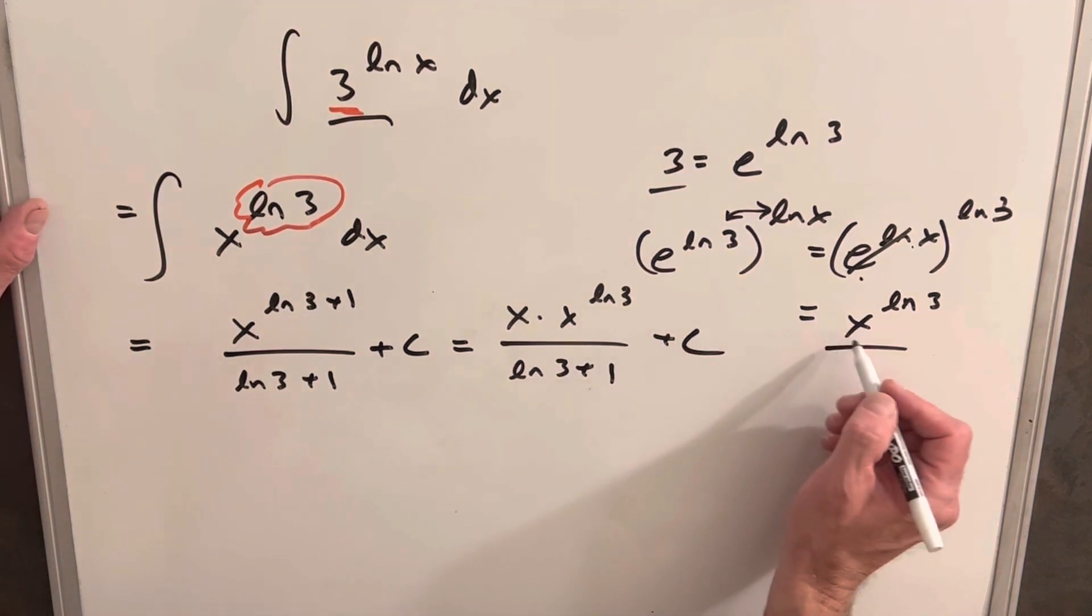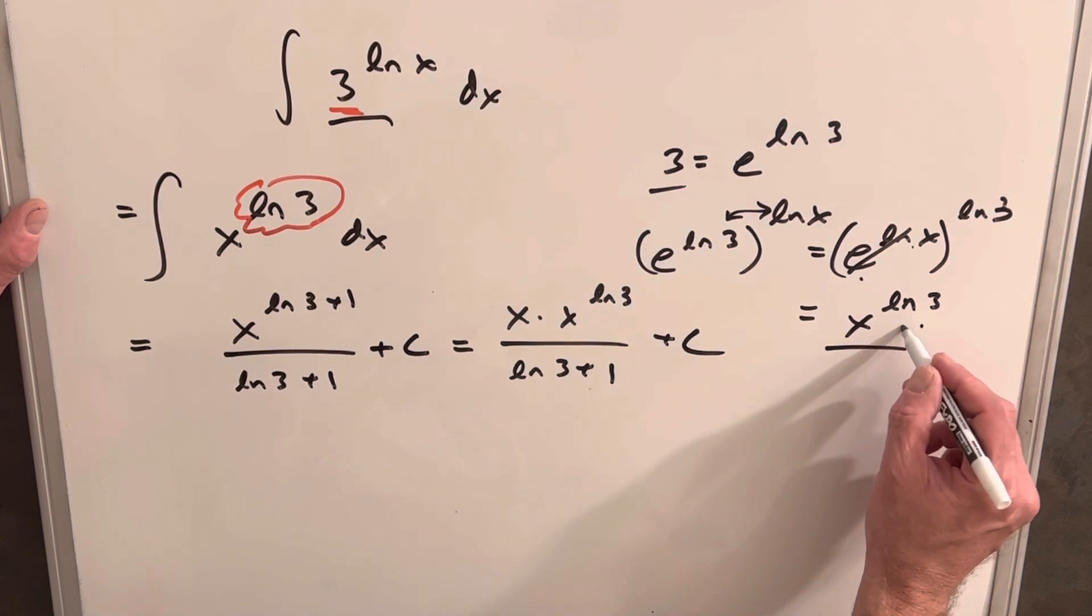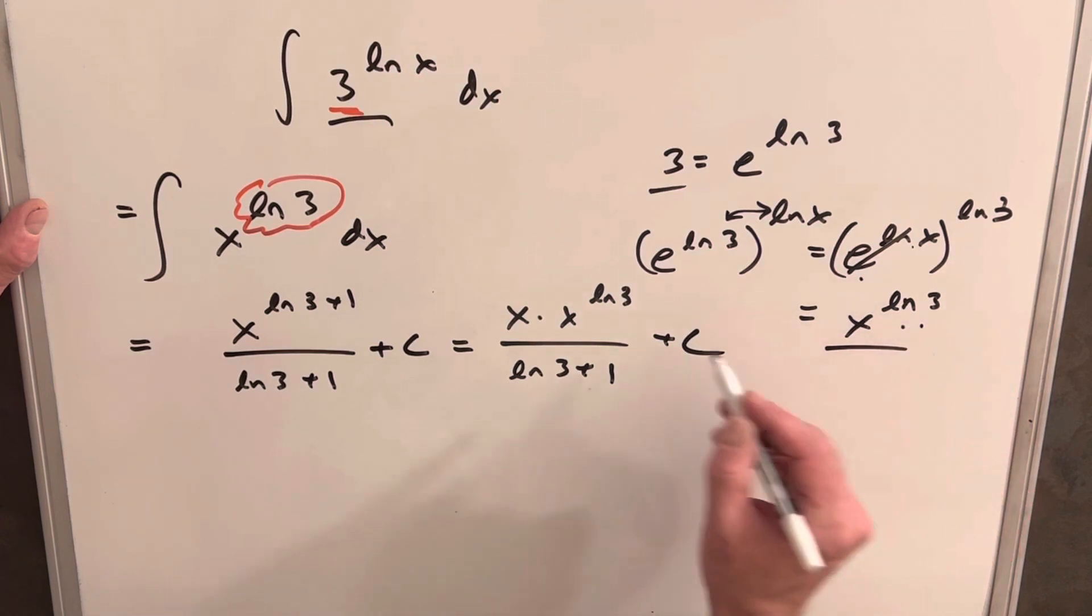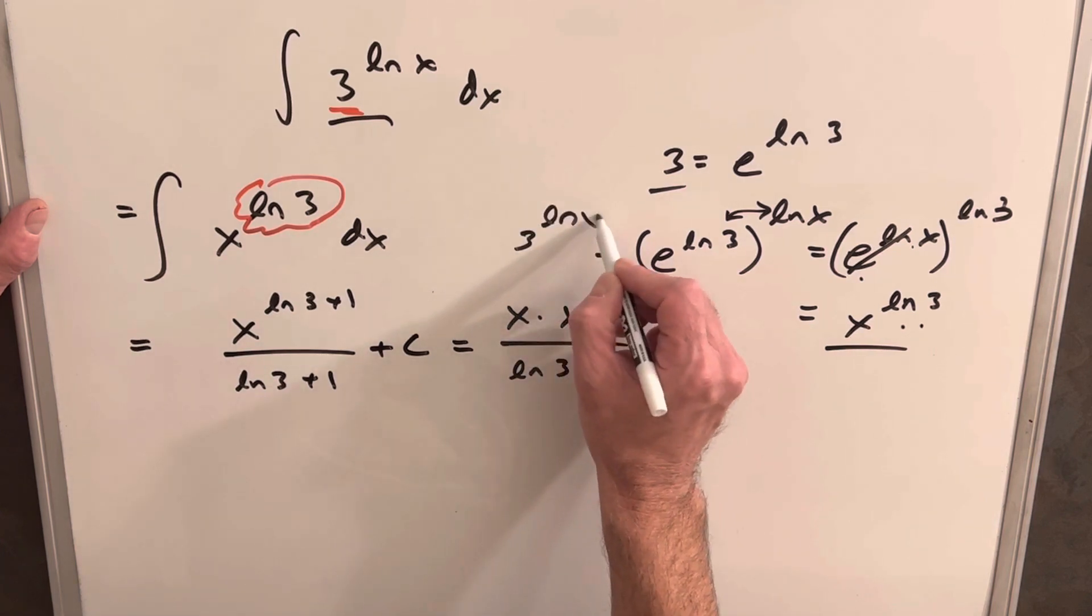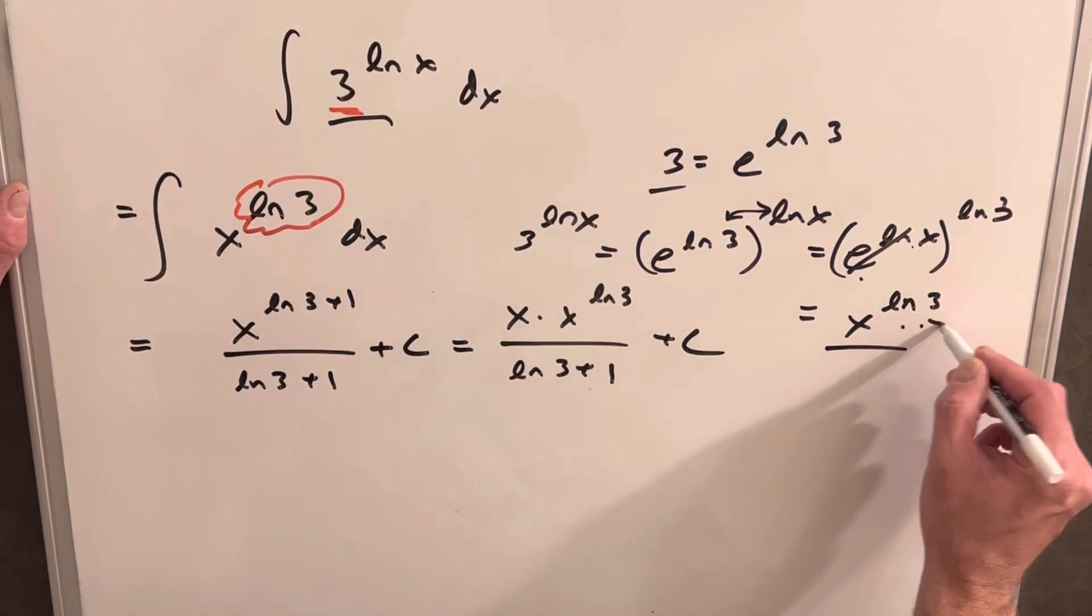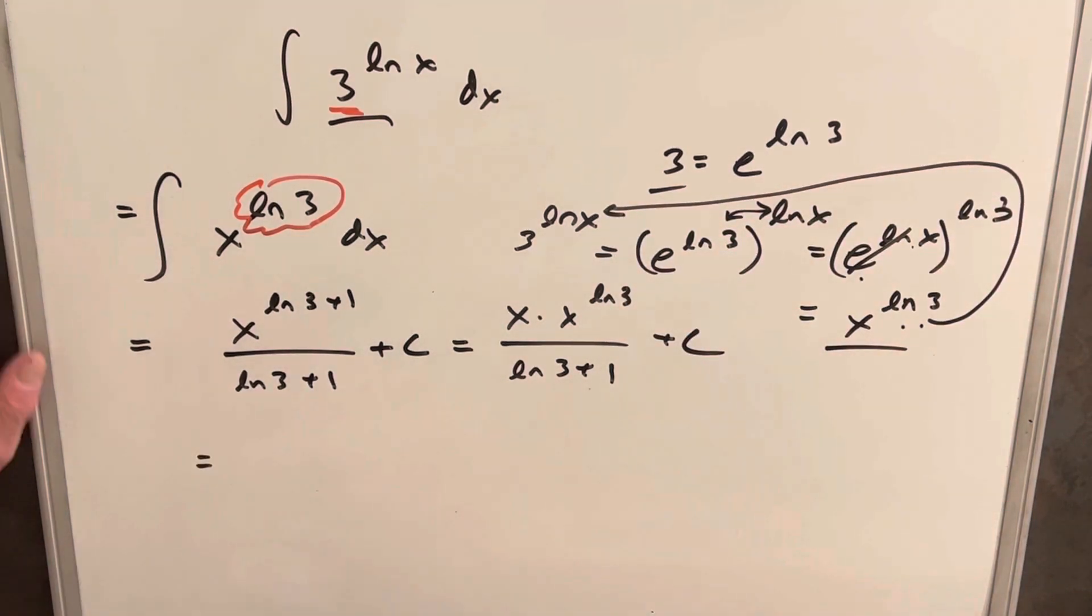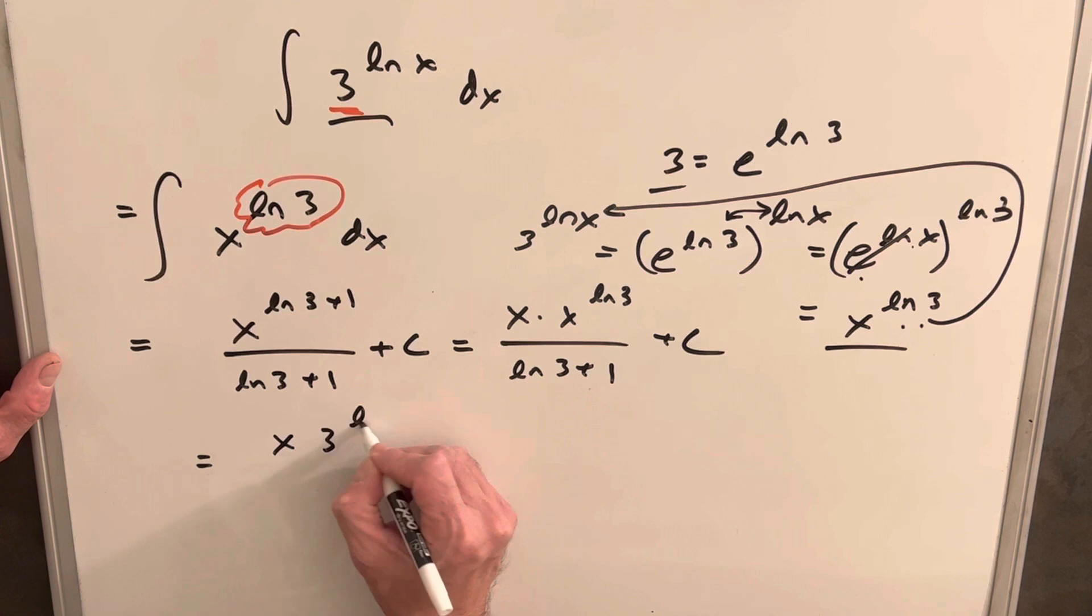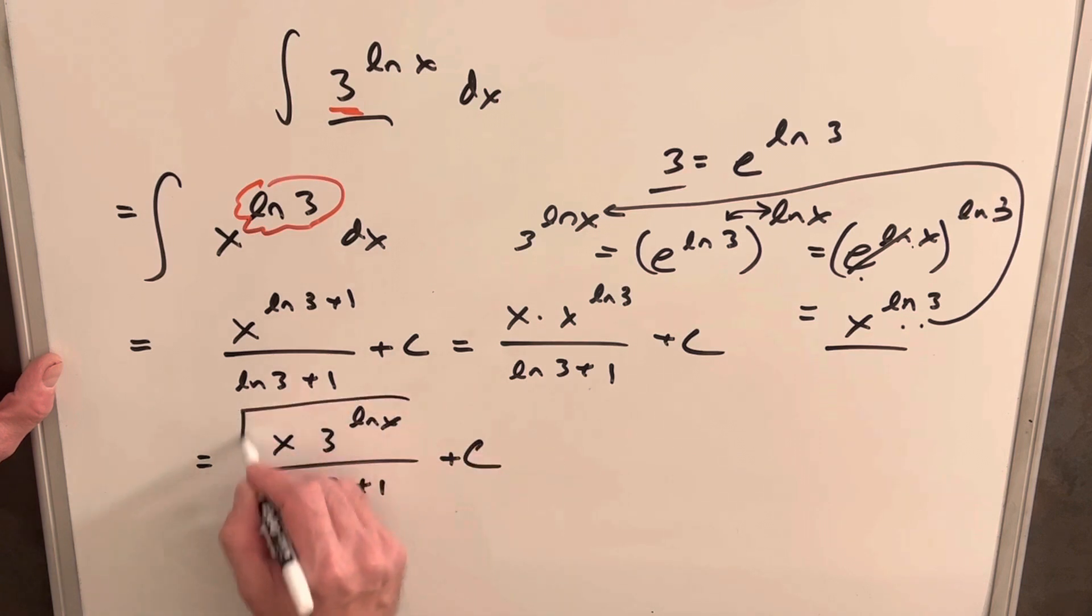And then we can just go backwards. We did this before, so we can go, let's see, we can take this. Let's see, we started off at 3 to the ln x. So we can take this and go all the way back to this. So our final answer is going to be x times 3 to the ln x over ln 3 plus 1 plus C, and we're done.